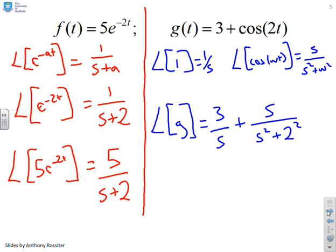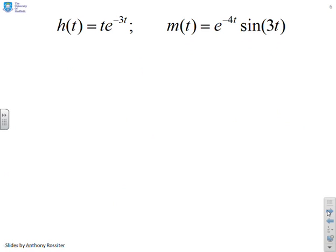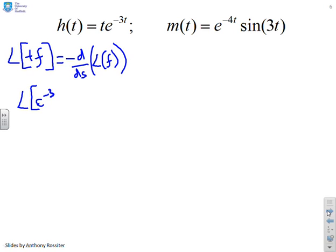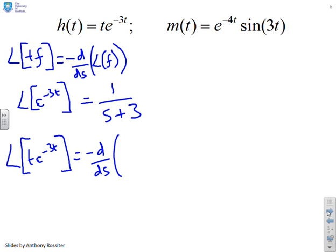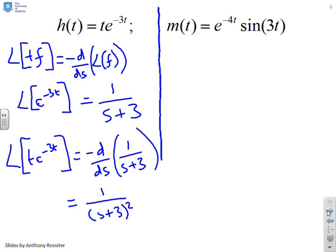Next question. We've got h equals t e to the minus 3t. Now you'll notice from the table that we have a rule that says Laplace of t times f is minus d/ds times Laplace of f. So that's the rule we want to look at because we've got t times another function. So first of all I can do Laplace of e to the minus 3t equals 1 over s plus 3. And therefore Laplace of t e to the minus 3t equals minus d/ds of 1 over s plus 3 which gives me 1 over (s plus 3) squared.